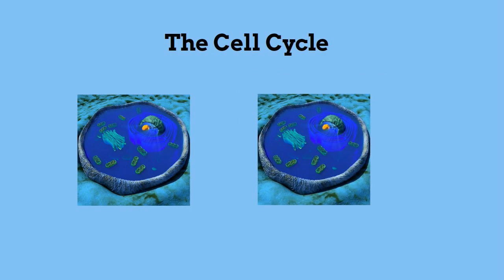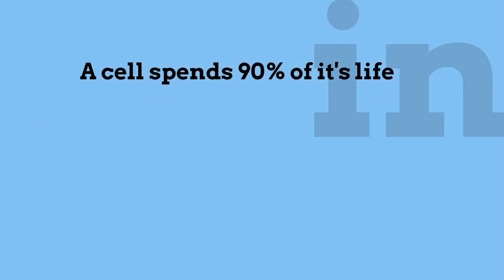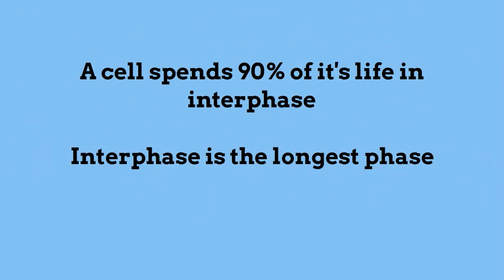The cell cycle includes interphase, prophase, metaphase, anaphase, telophase, and cytokinesis. A cell spends about 90% of its life in interphase.